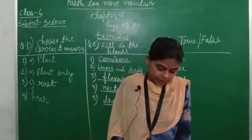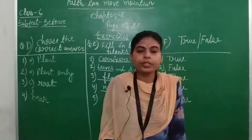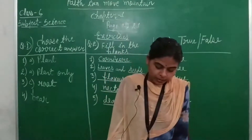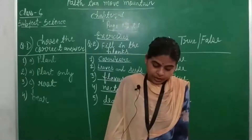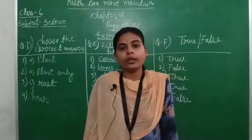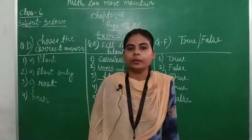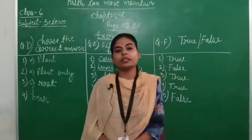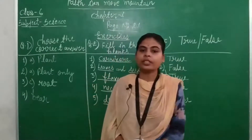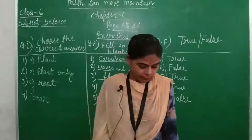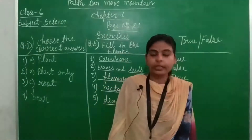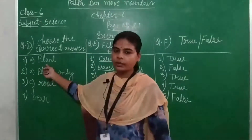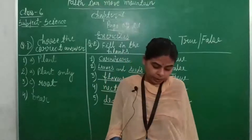Question number 1: the contents of dhokla are obtained from — plant, animal, both, or none of these? Students, tell me. Very good — Plants. Tick option A, Plants.